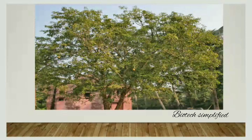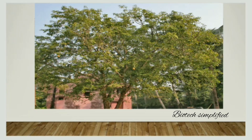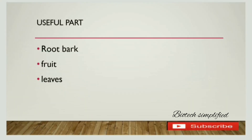The tree shown in the diagram is Aegle marmelos — a medium-sized deciduous tree. A deciduous tree is one that sheds its leaves in a certain season and regrows them in another. Its bark is yellowish brown in color and its leaves are aromatic, having a special scent. The useful parts of the plant are root bark, fruit, and leaves.